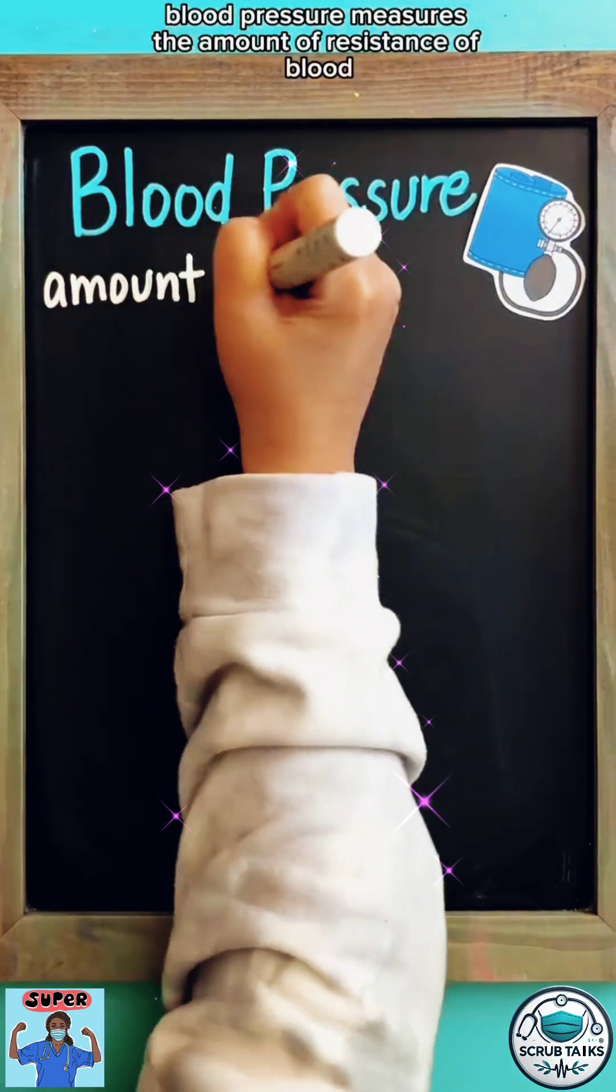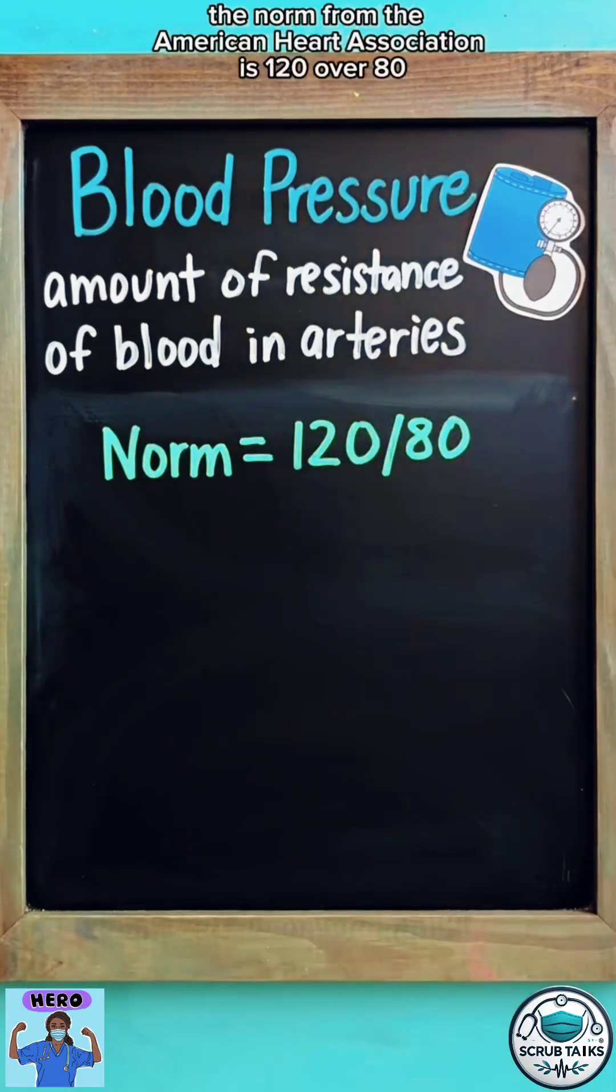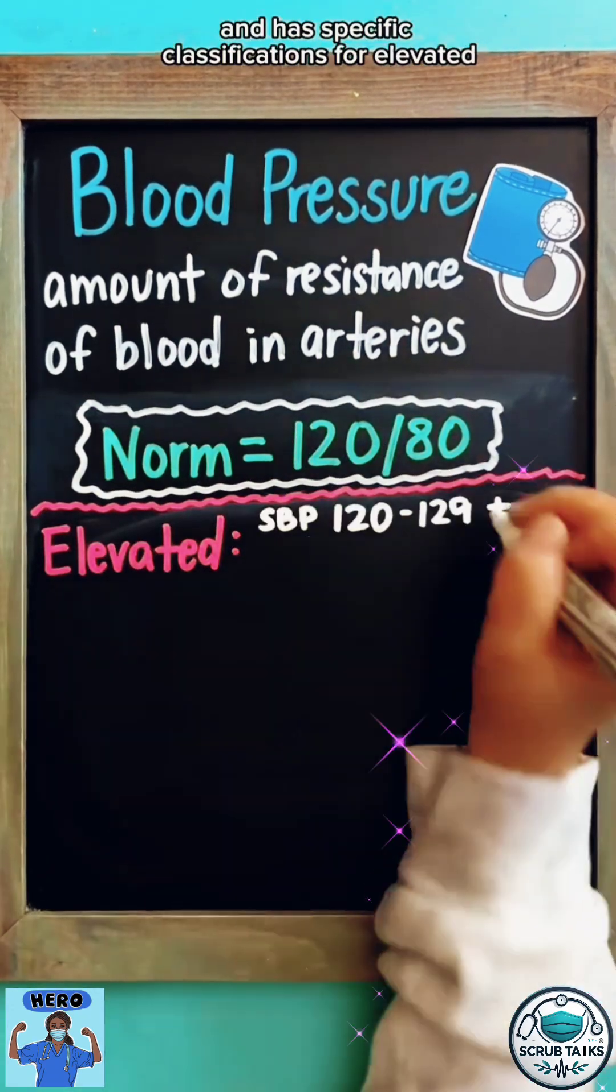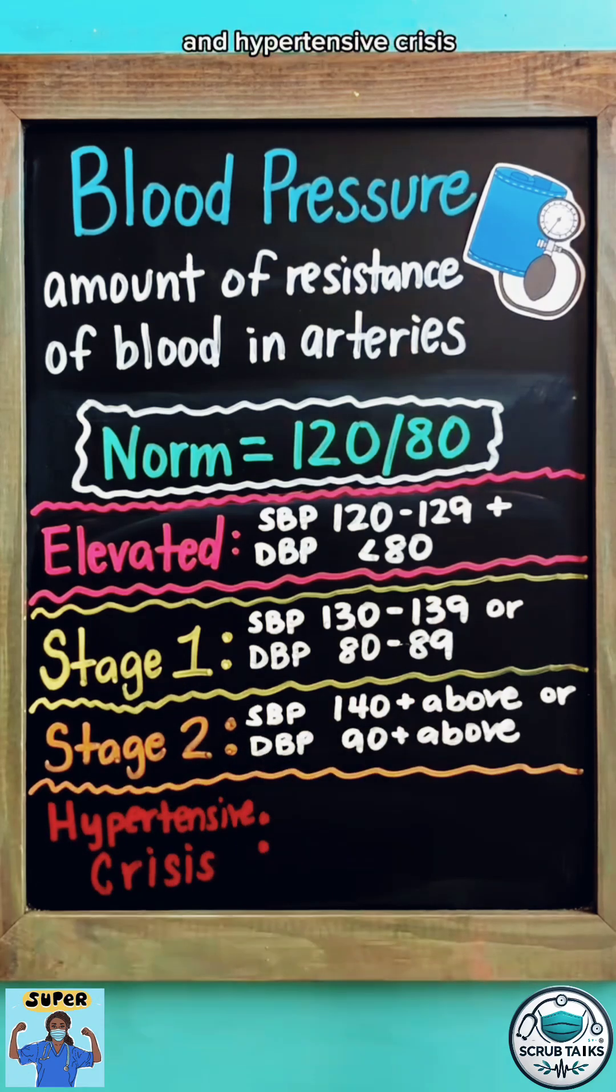Blood pressure measures the amount of resistance of blood pumping through the arteries. The norm for the American Heart Association is 120 over 80 and has specific classifications for elevated, stage 1 and stage 2 hypertension, and hypertensive crisis.